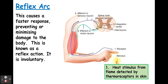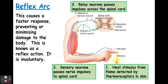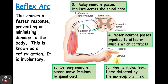In this particular example, heat is the stimulus. It's detected by thermal receptors. We've got the sensory neuron that passes the impulse to the spinal cord in the central nervous system. We have the relay neuron inside that central nervous system in the spinal cord, and then the motor neuron passes it to the effector, which is a muscle contracting to move your arm away.